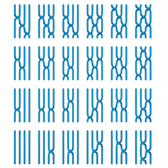Braids and Configuration Spaces. To explain how to reduce a braid group in the sense of Artin to a fundamental group, we consider a connected manifold X of dimension at least 2.